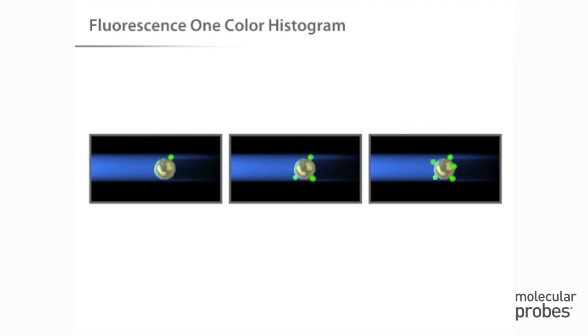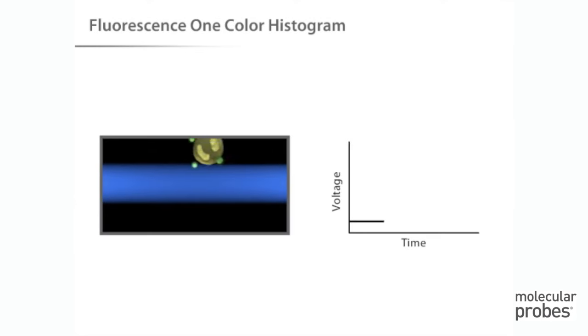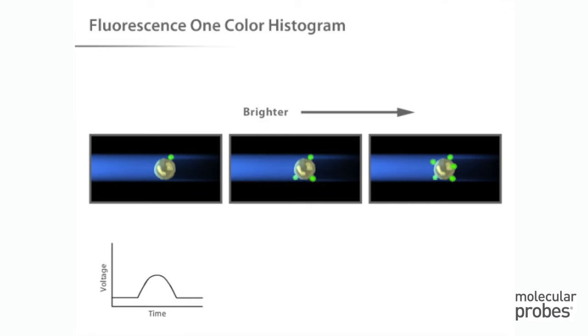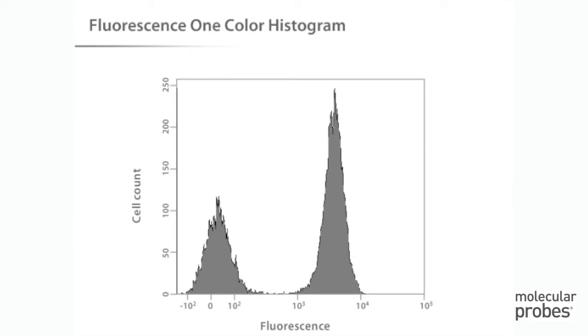Fluorescence data is collected in generally the same way as forward and side-scatter data. In a population of labeled cells, some will be brighter than others. As each cell crosses the path of the laser, a fluorescent signal is generated. The fluorescent light is then directed to the appropriate detector, where it is translated into a voltage pulse proportional to the amount of fluorescence emitted. All of the voltage pulses are recorded and can be presented graphically.